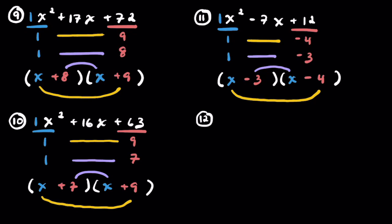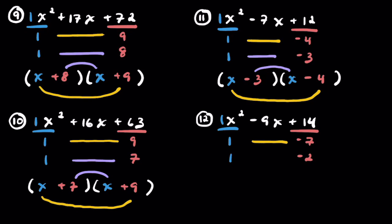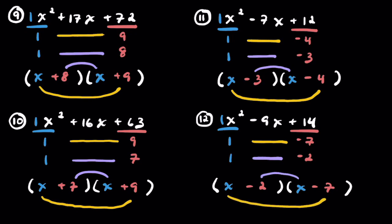Problem 12: x squared minus 9x plus 14. I'll put the 1, then positive 14 with 1 and 1. This is going to be two negative numbers — 7 and 2 make 14, so we want negative 7 and negative 2. Pairing them: that's negative 7x and negative 2x. Filling in the empty parentheses: x and x, then negative 7 and negative 2. So (x − 7)(x − 2).